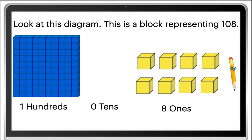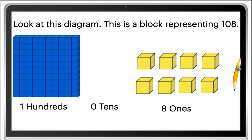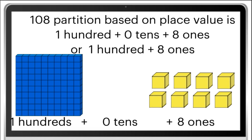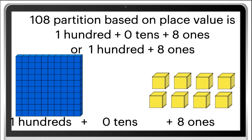This is a block representing 108 — 1 hundreds, 0 tens, 8 ones. Partition 108 based on place value is: 1 hundreds plus zero tens plus eight ones.